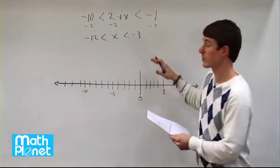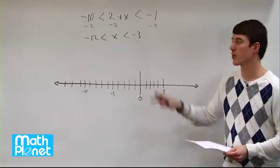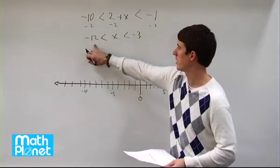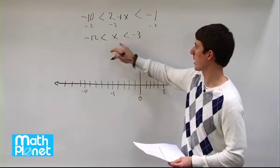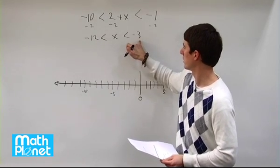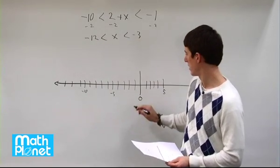So we've simplified it — we've done everything we need to do. We have x all by itself, so we know x lies between these two numbers. X is greater than negative 12 and less than negative 3.